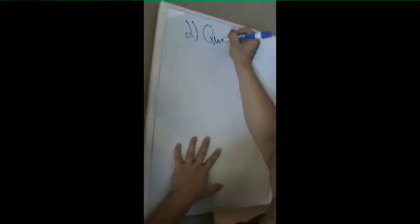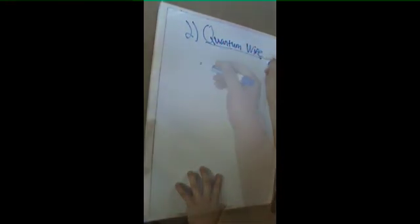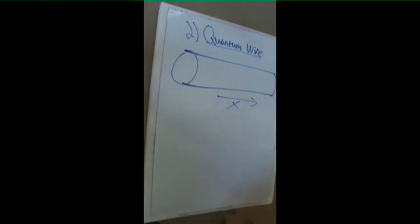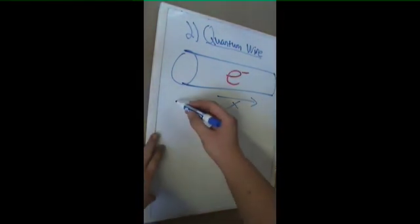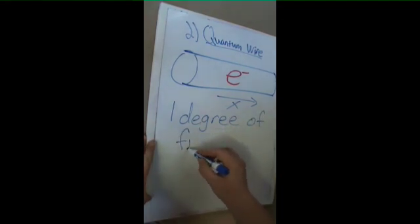The second is the quantum wire. In this nanowire, the electron is only able to move in one direction, therefore has one degree of freedom.